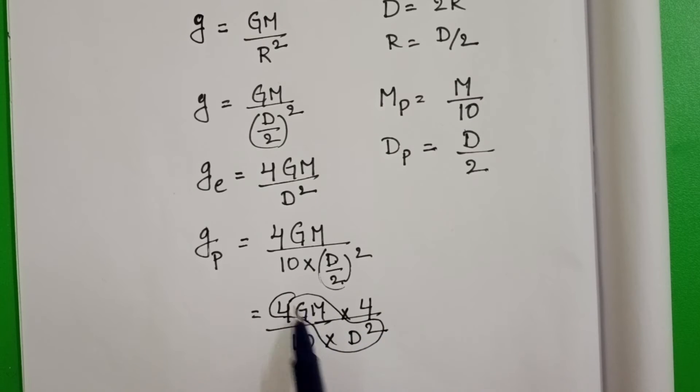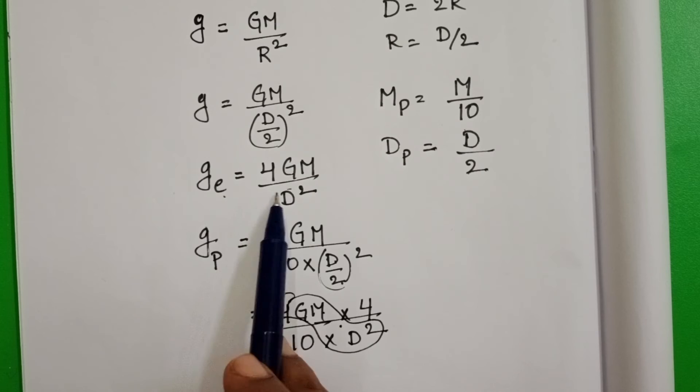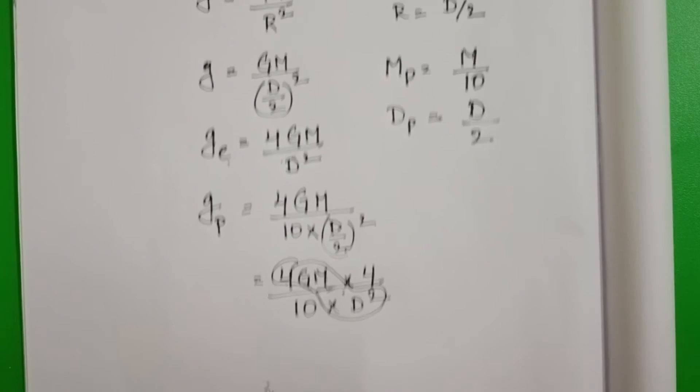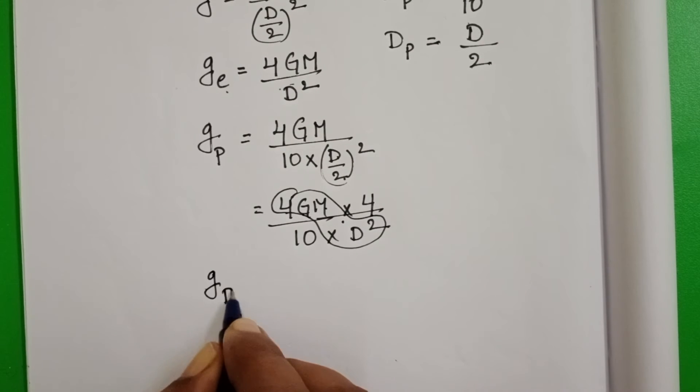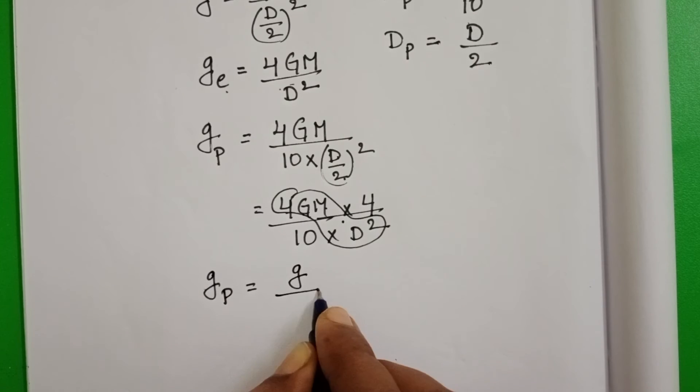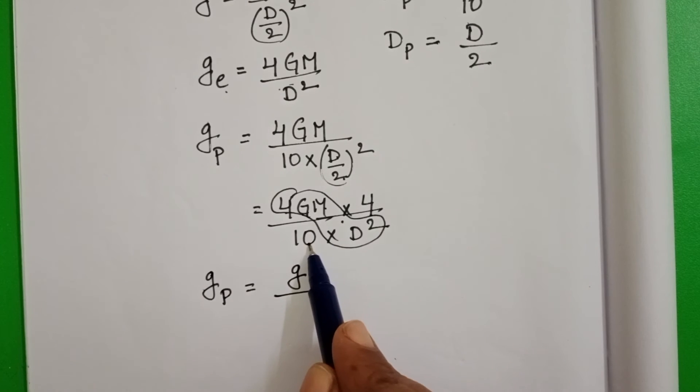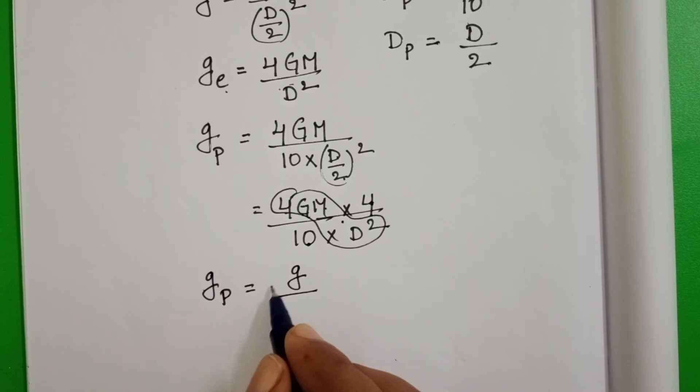Now 4GM by D square. In this place substitute acceleration due to gravity on the surface of the earth, G by, here 10 is there and in numerator 4. So 4G by 10.